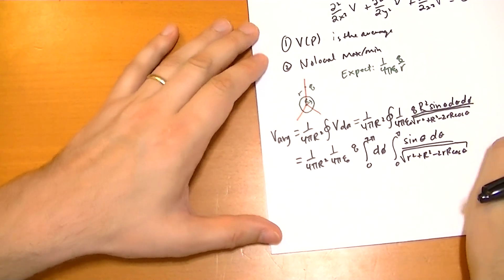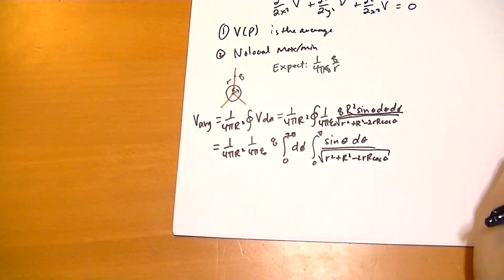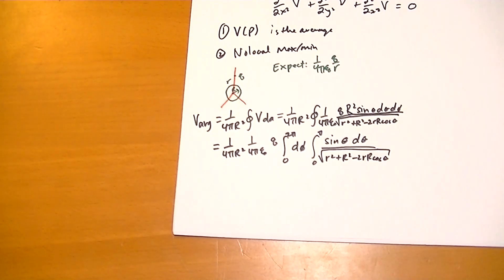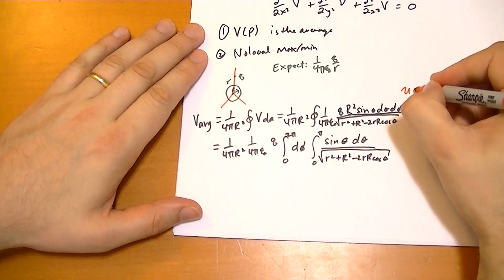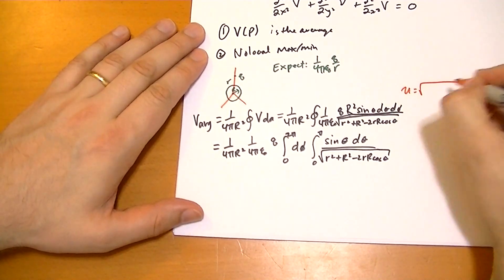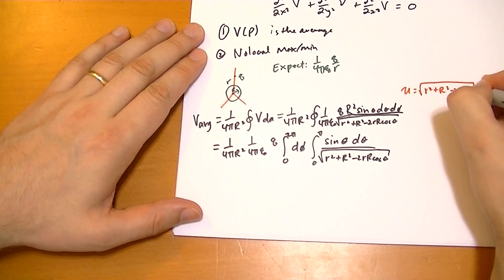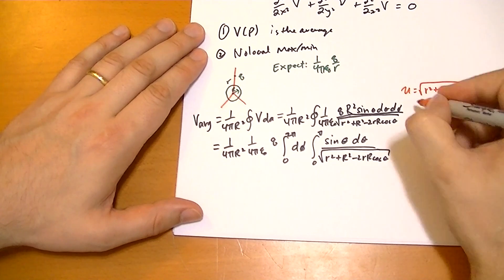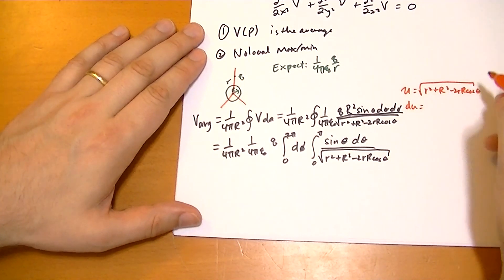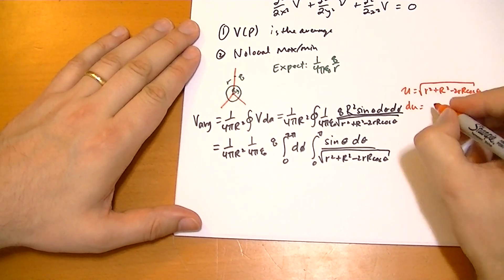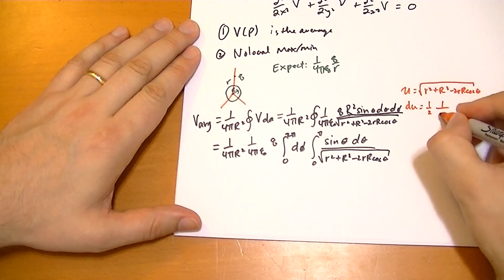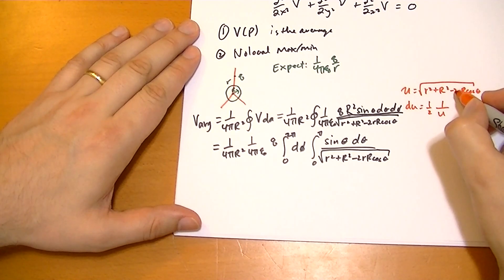And we've actually solved an integral like this before, so I'm going to walk through how you do that rather quickly. So we're going to choose u to be equal to the square root of that stuff on the inside. So r squared plus R squared minus 2rR cos theta. And so du is going to be equal to the derivative of the outside, which is 1 half, 1 over u, times the derivative of the inside.